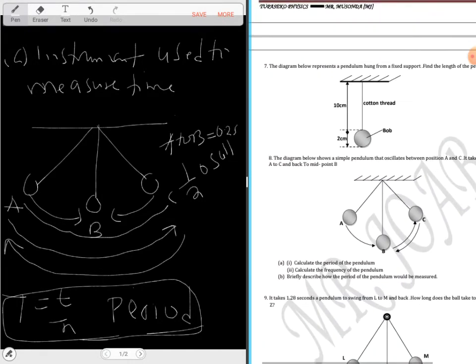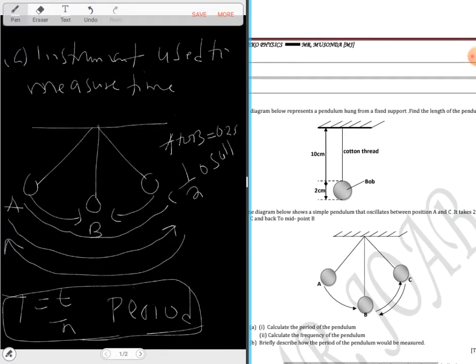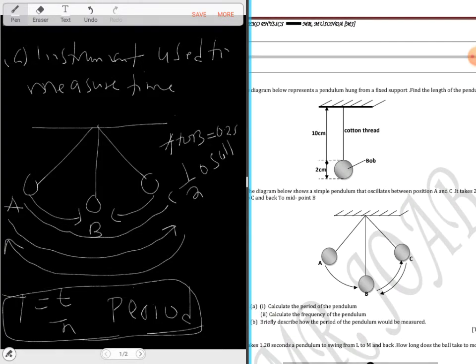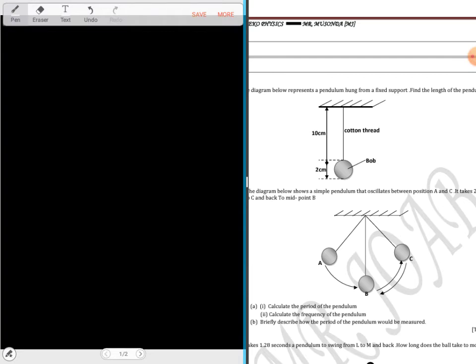Let's look at this question. The diagram below represents a pendulum hung from a fixed point. Find the length of the pendulum. We can see something here. There's a bulb here, and from here to somewhere here, and then from there to somewhere there. There's two centimeters and here we have 10 centimeters.